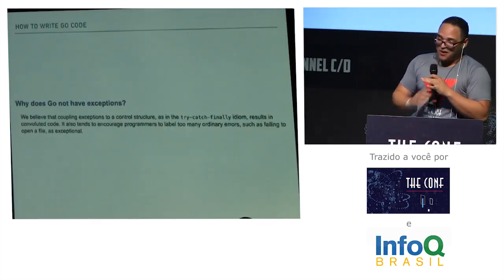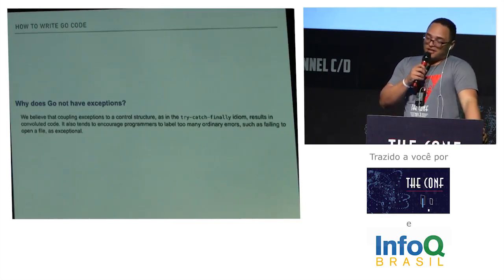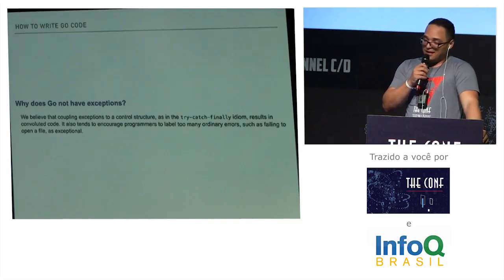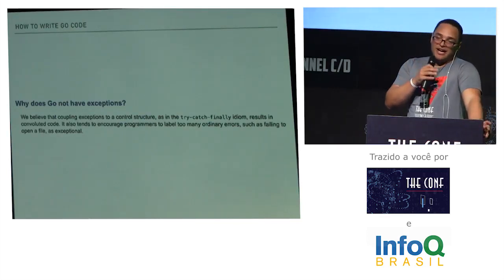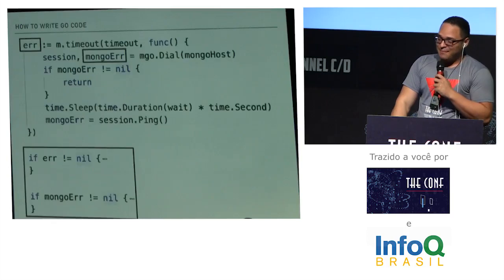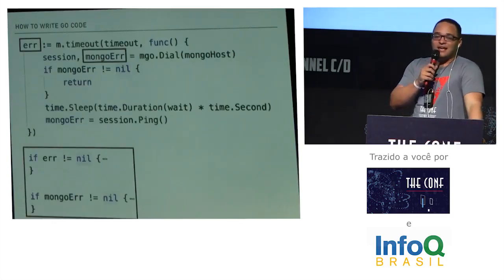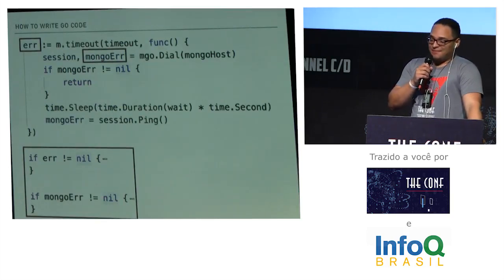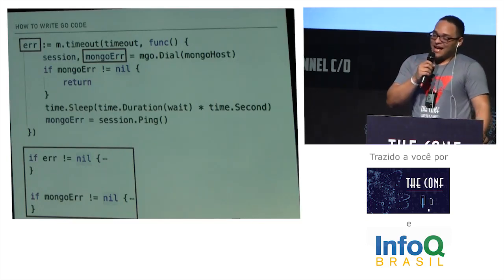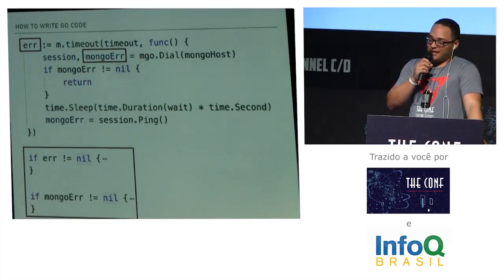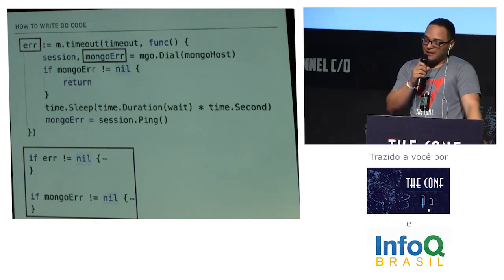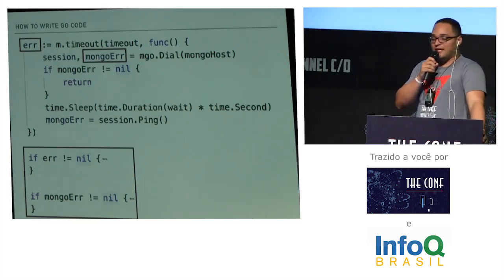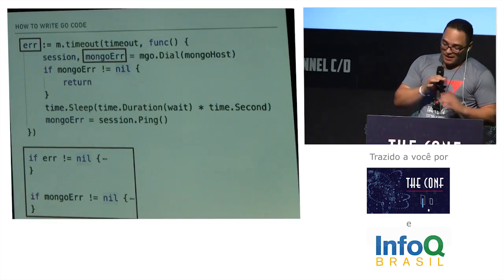Exceptions: Go does not implement exceptions. According to the documentation, try/catch/finally — or in our case, rescue — is a bit overwhelming. Instead, you are responsible for managing and handling your errors. Everything you do that can return an error, you capture it and always check if the error is different from nil. Because the zero value of an error is nil — if it's not nil, you need to act.